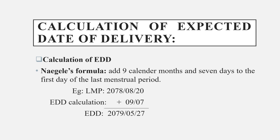For calculation we use Naegele's formula. In Naegele's formula, we take the first day of the last menstrual period (LMP), then add 9 calendar months and 7 days.